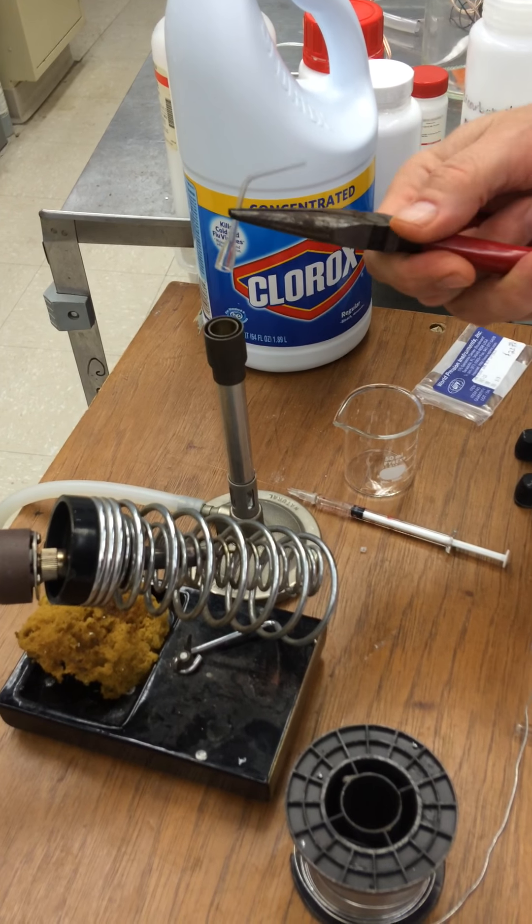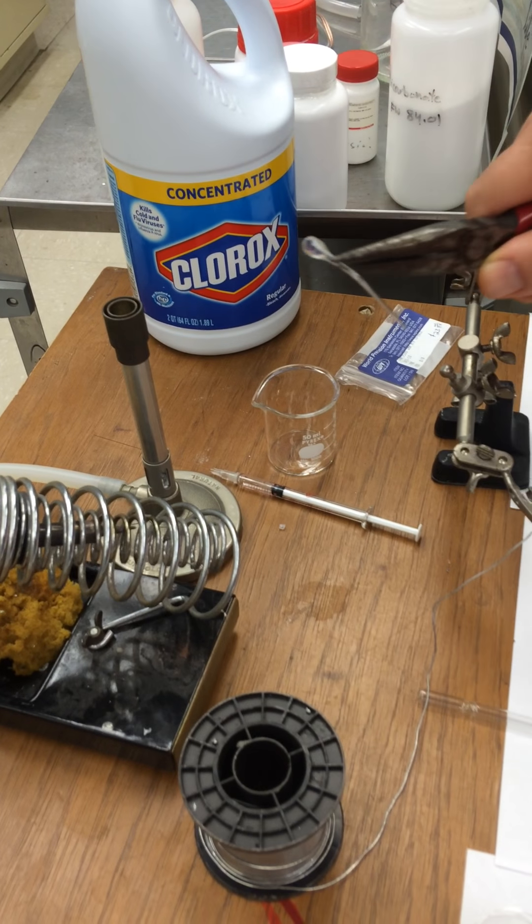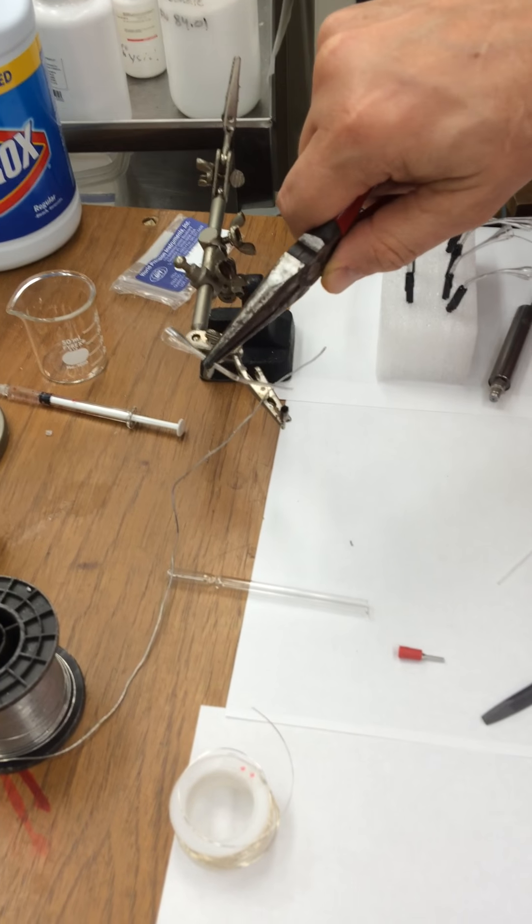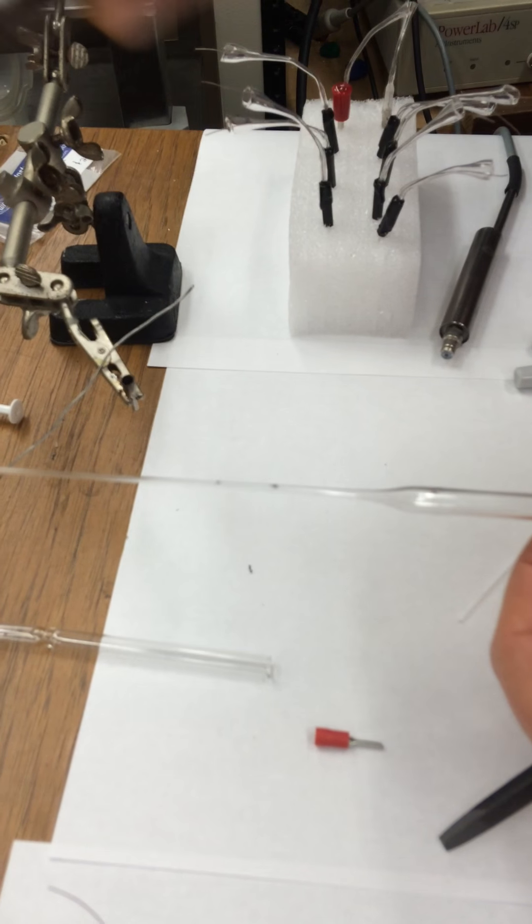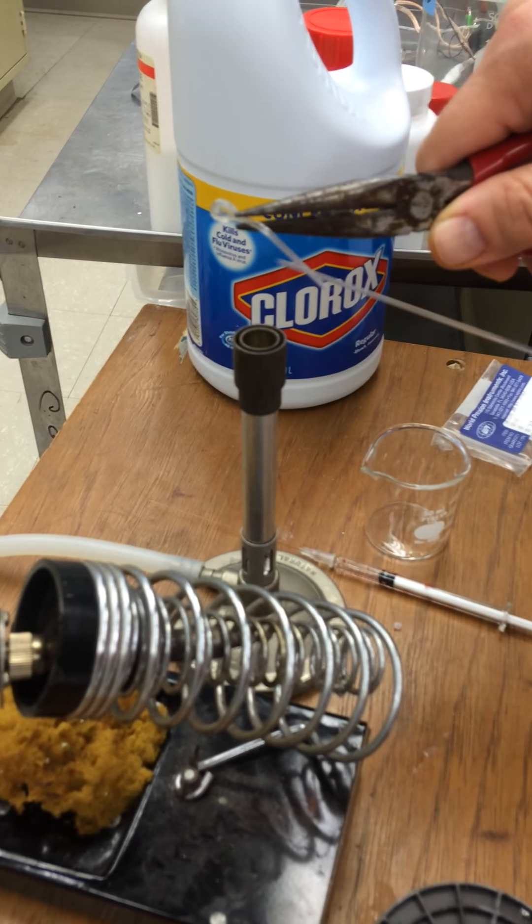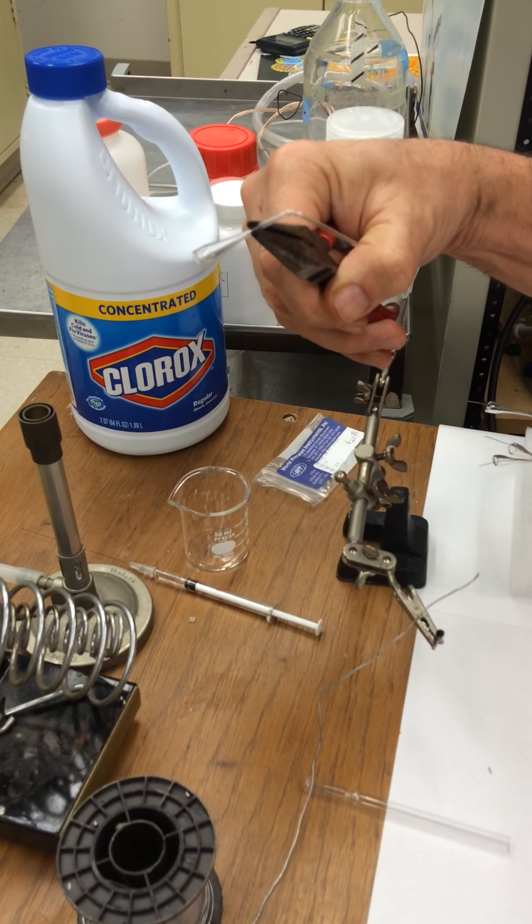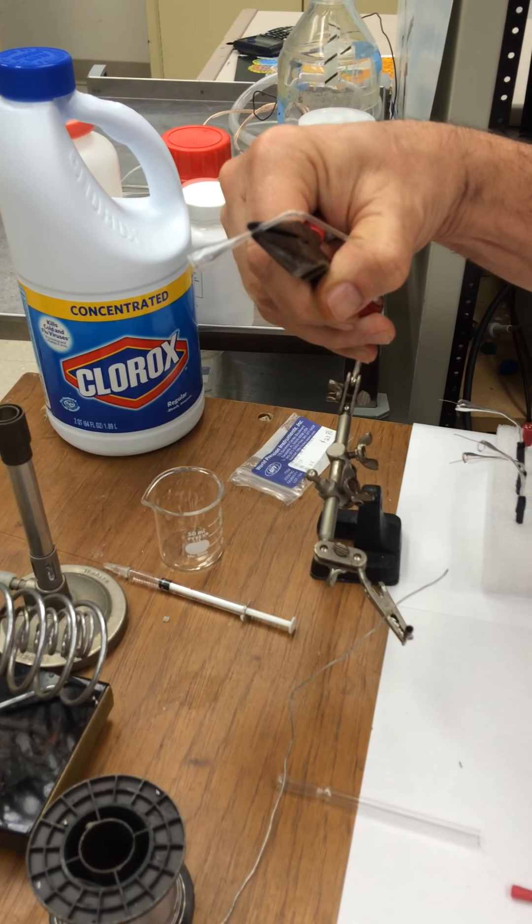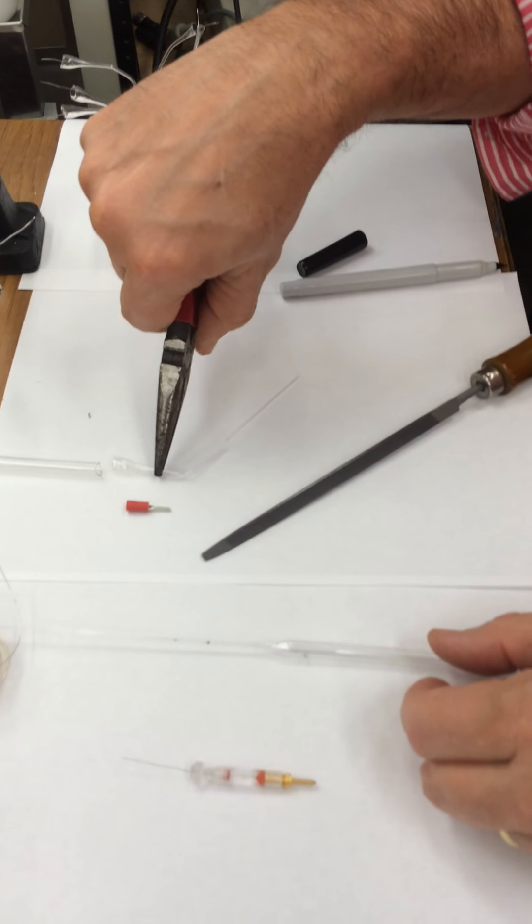This is already bent. Remember originally it was just straight. So what you can do to bend it is just put that over the fire and it will slowly bend down like that. You want it about 45 or 30 degree angle for these electrodes.